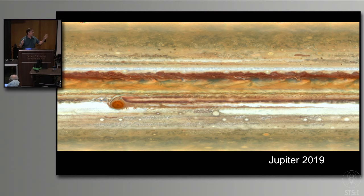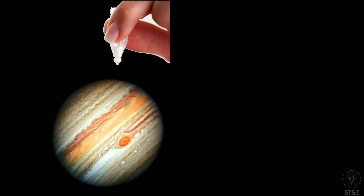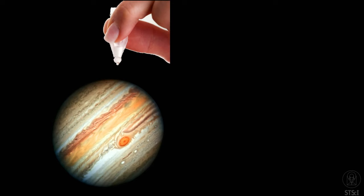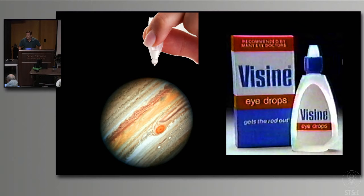Even more striking: Red Spot Jr. is no longer red. We saw the first-ever formation of a red spot, and now it has faded back to a white oval. When I said these were 'eye-dropping' images, I was referring to someone using eye drops on Jupiter — because they get the red out. We do not know for sure why we're losing the red. That's exactly why we're doing the OPAL program — to have the data to study these effects and build better hypotheses.